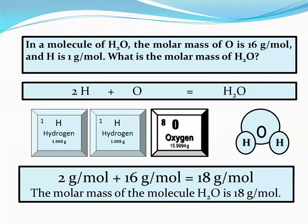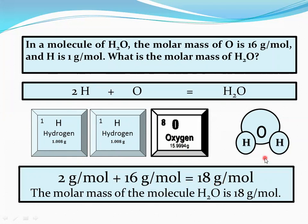In a molecule of water, the molar mass of oxygen is 16 grams per mole and hydrogen is 1 gram per mole. What is the molar mass of water? We already discussed this in the previous module. Let's recap. Two hydrogen atoms combined with one oxygen atom form a water molecule. The molar mass of one hydrogen atom is 1 gram, so two hydrogen atoms is 2 grams. Oxygen molar mass is 16 grams. Adding them: 2 plus 16 equals 18 grams per mole. So the molar mass of water is 18 grams per mole.